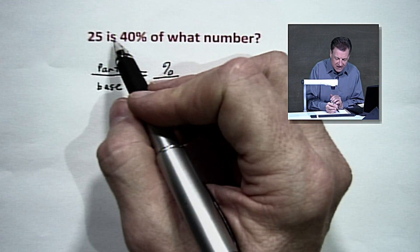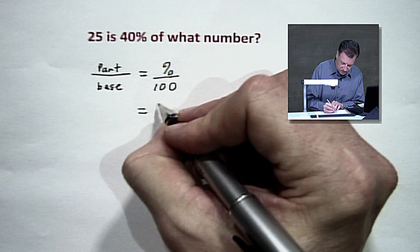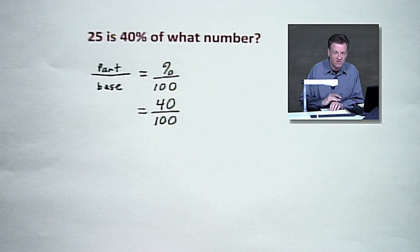it's saying 25 is 40%. We know where that's going. The percent always goes over the 100. So there we go, pop it right in there. 40 over 100.